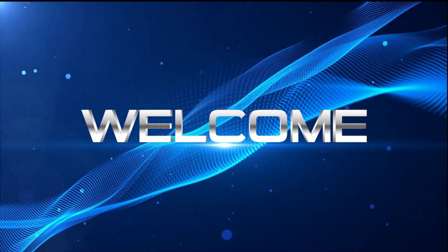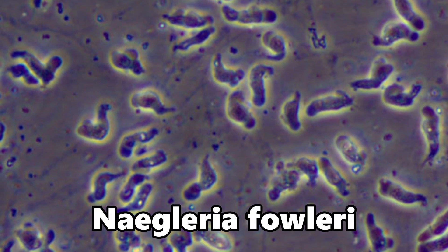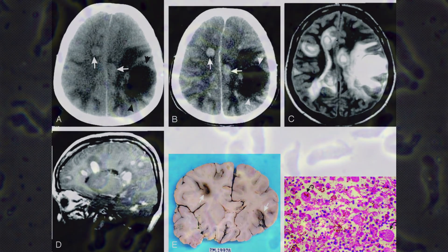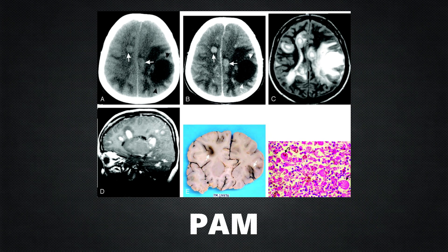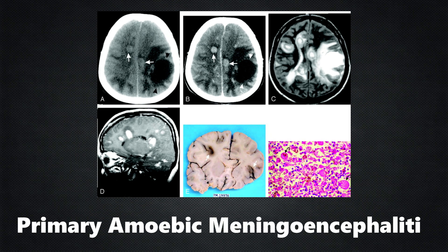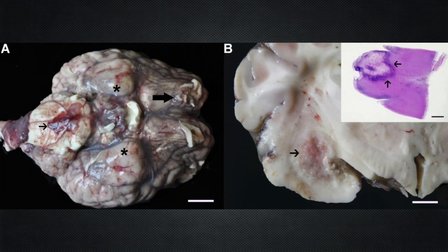In this video, we're going to talk about the brain-eating amoeba. This amoeba, called Naegleria fowleri, is a type of microorganism that can cause a rare but fatal disease called PAM, which stands for Primary Amoebic Meningoencephalitis. When someone is exposed to Naegleria fowleri, the amoeba can cause inflammation and destruction of brain tissues.